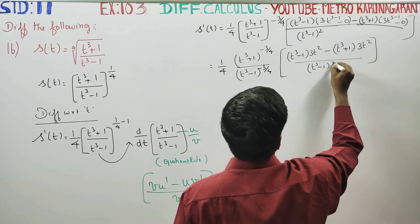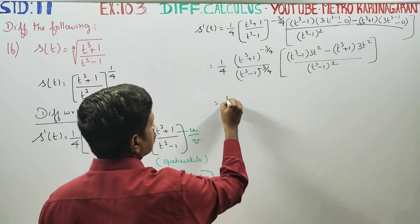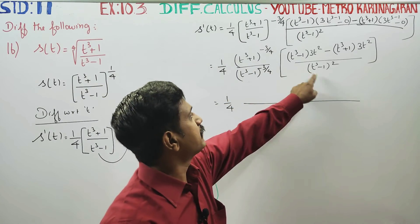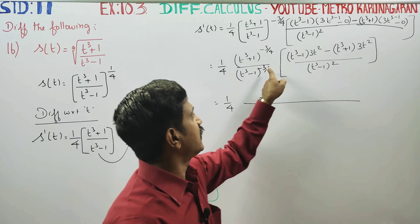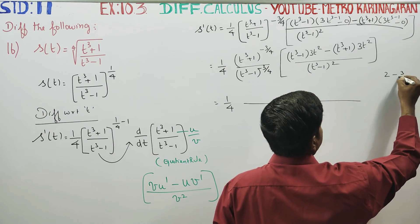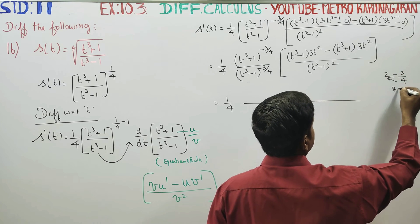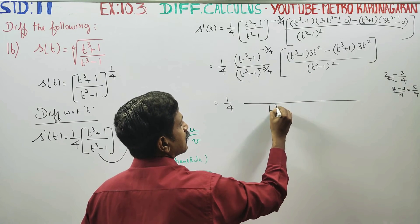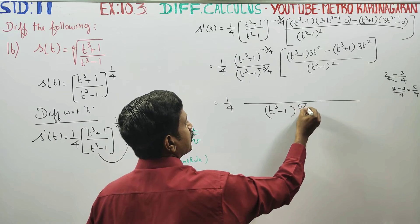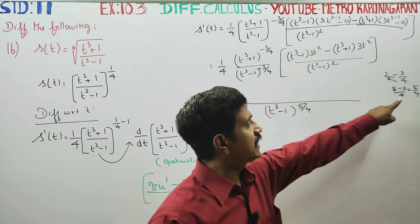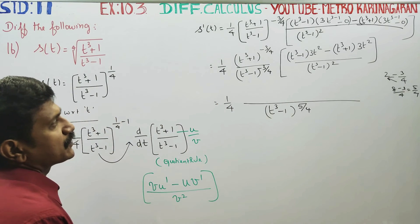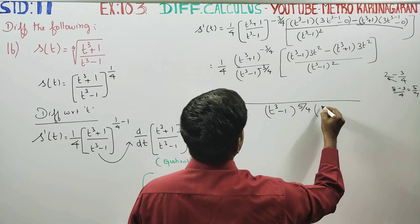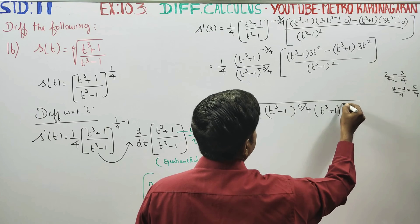Divided by (t cubed minus 1) squared. Next, multiplying: 1 by 4 is brought forward. When bases are the same, powers add. We get 2 minus 3 by 4 — four twos are 8, so 8 minus 3 by 4 gives 5 by 4. So (t cubed minus 1) is raised to the power 5 by 4. The numerator carries power minus 3 by 4 and the denominator (t cubed plus 1) carries power 3 by 4.